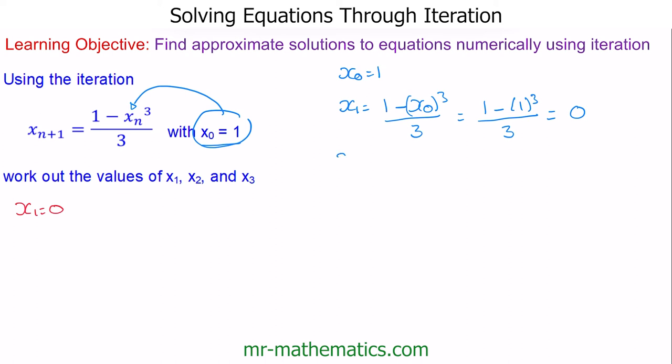To work out x₂, I'll substitute in x₁: 1 - x₁³/3. Using the answer function, 1 - (previous answer)³/3 gives us 1/3. With this stored in the calculator, I'll simply press equals again, giving x₃ = 26/81. So here we have the first three iterations.